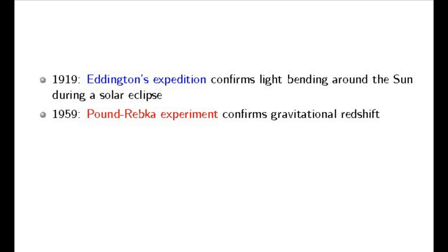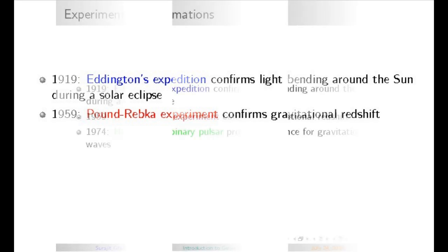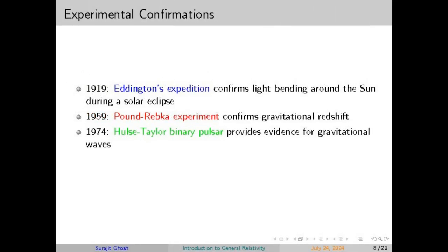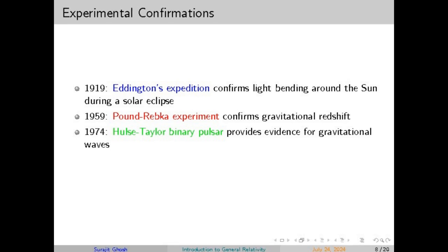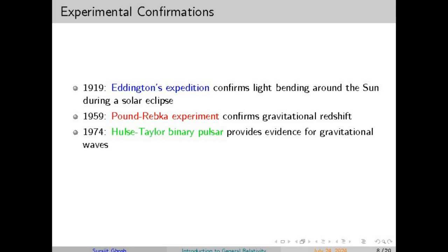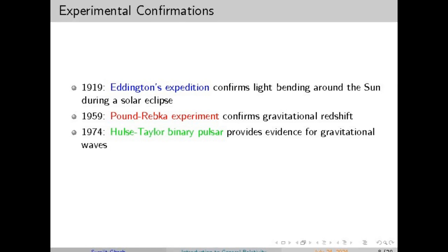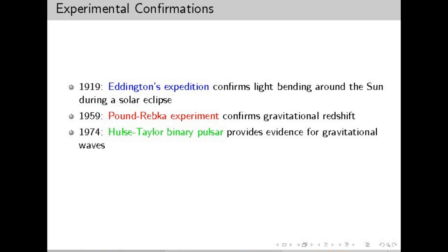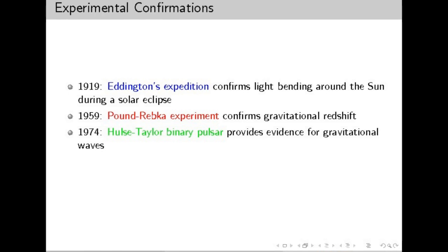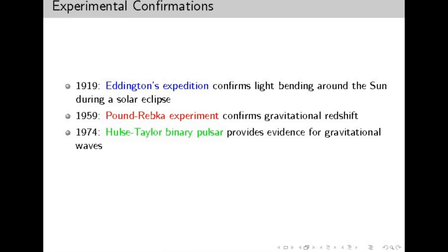In summary, the mathematics of general relativity involves describing how spacetime is shaped by mass and energy. The key mathematical objects — like the metric tensor and curvature tensors — help us understand and calculate the effects of this curvature. These equations have been tested rigorously and have shown themselves to be remarkably accurate in describing the behavior of the universe.